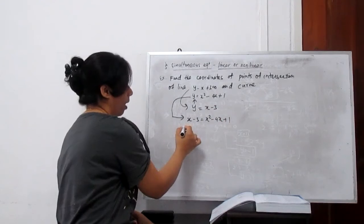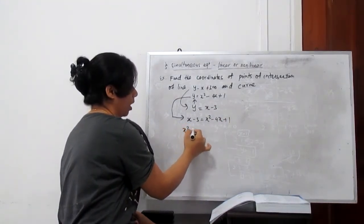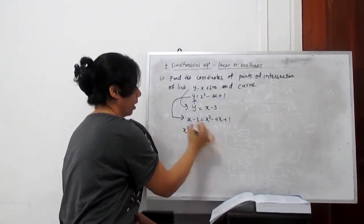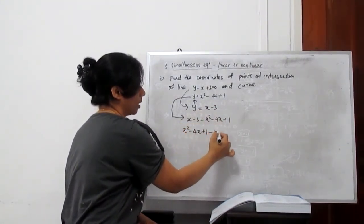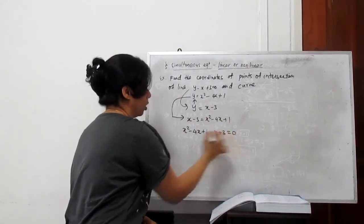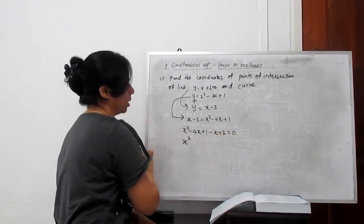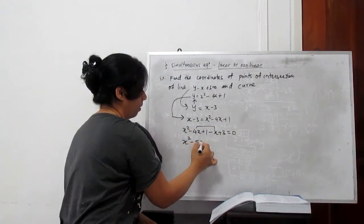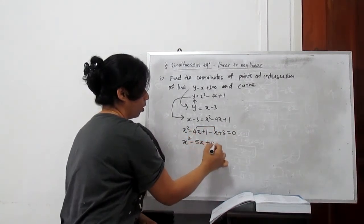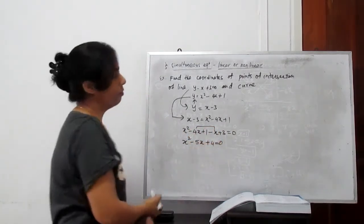I will get x minus 3 equals x squared minus 4x plus 1. Clear? Now everything one side: x squared minus 4x plus 1, this side becomes minus x plus 3 equals 0. So our quadratic equation is x squared minus 5x plus 4 equals 0.